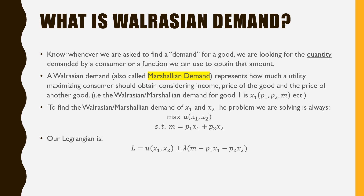To find the Walrasian or Marshallian demands for goods one and two, the problem we are always solving is to maximize our utility function subject to our budget constraint. Our Lagrangian is our utility function as a function of good one and good two, plus or minus lambda times income m minus the price of good one times the quantity of good one, minus the price of good two times good two.